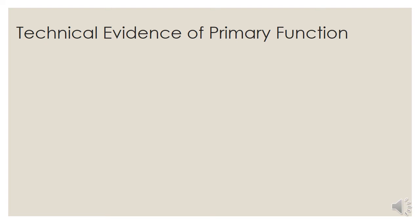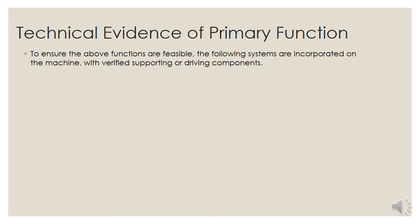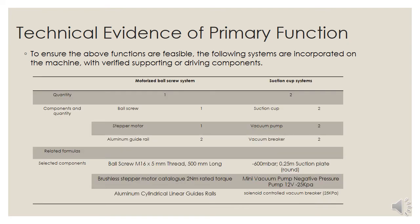To ensure the above functions are feasible, a motorized ball screw system and two suction cups are required. The information is shown below in the table. The motorized ball screw system allows the vertical movement of our machine and it consists of a ball screw, a stepper motor, and two guide rails. In order to ensure the safety and functionality of our design, each component is selected with a corresponding formula.